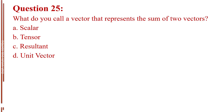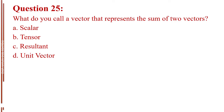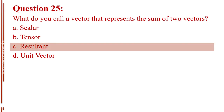Question number twenty-five. What do you call a vector that represents the sum of two vectors? Letter A, scalar. Letter B, tensor. Letter C, resultant. Letter D, unit vector. The answer is Letter C, resultant.